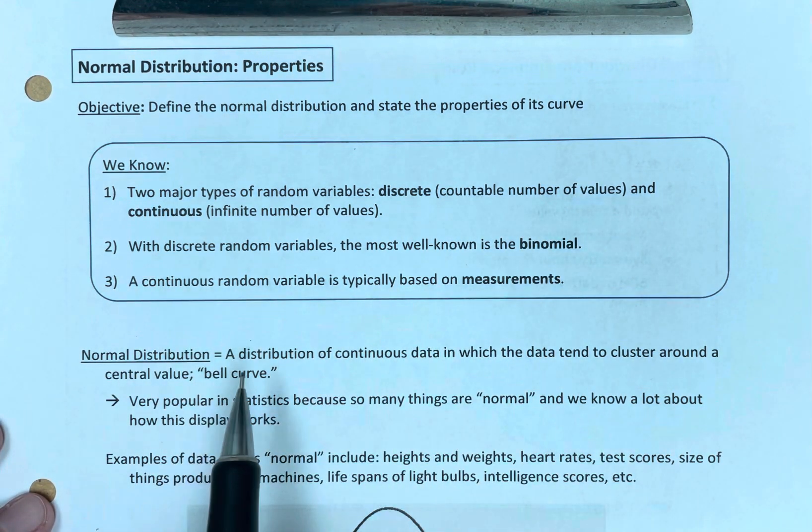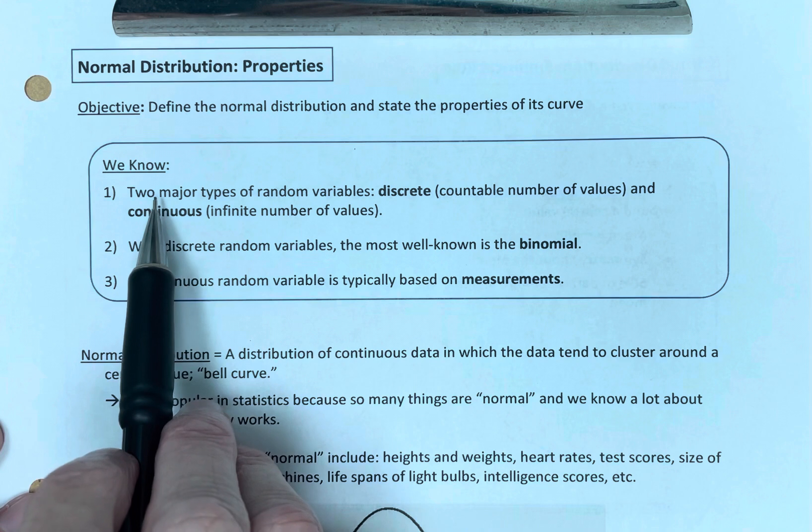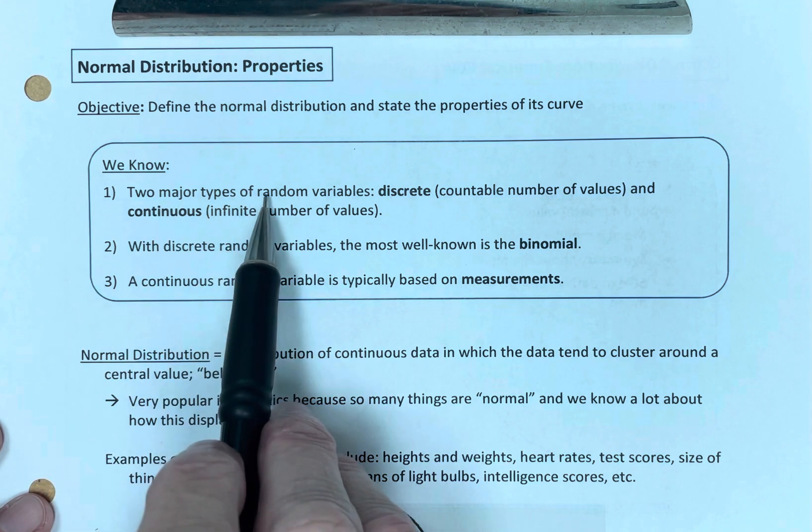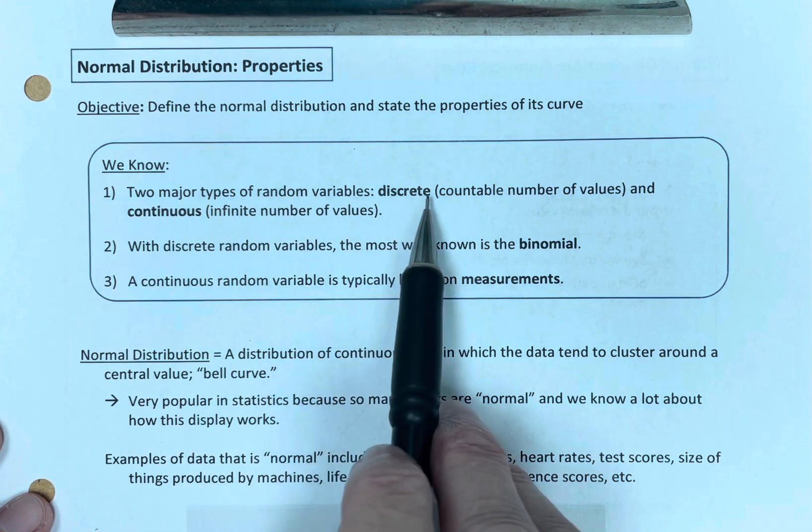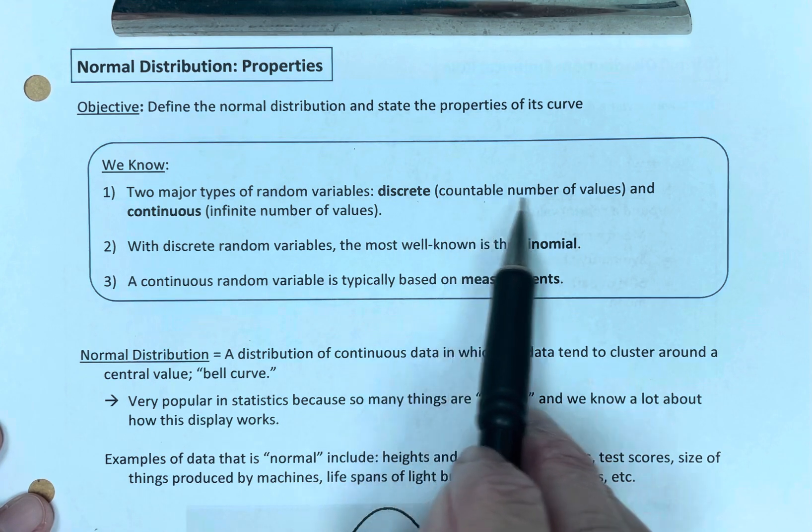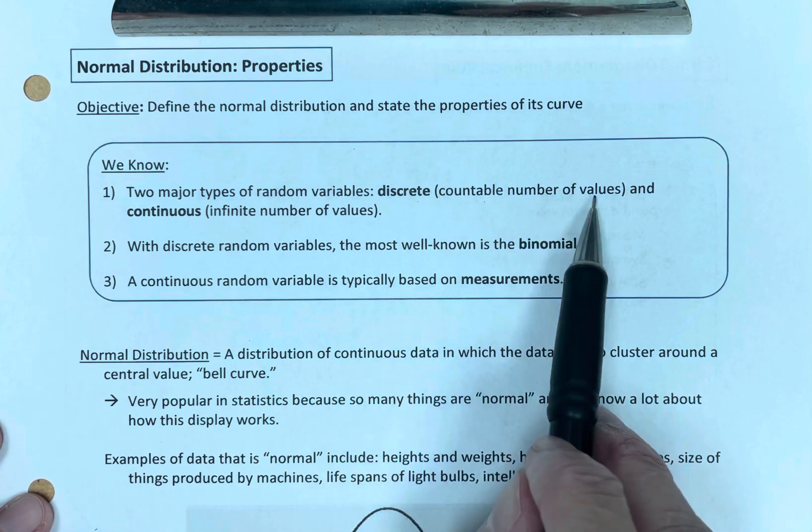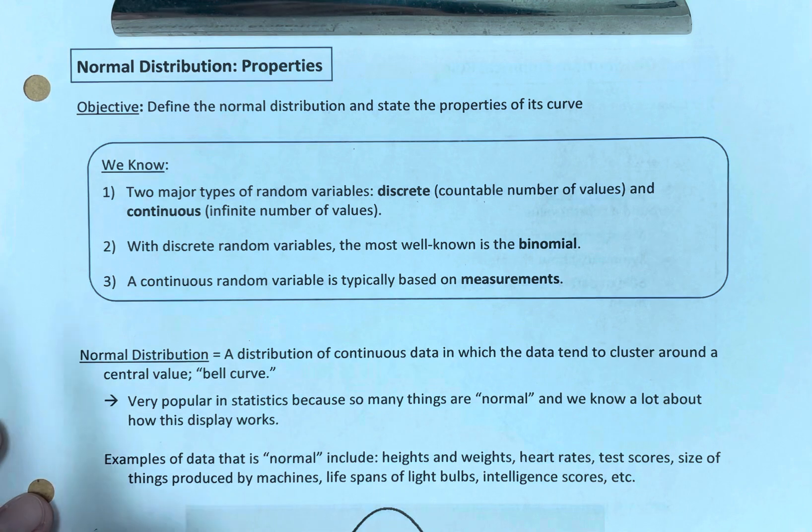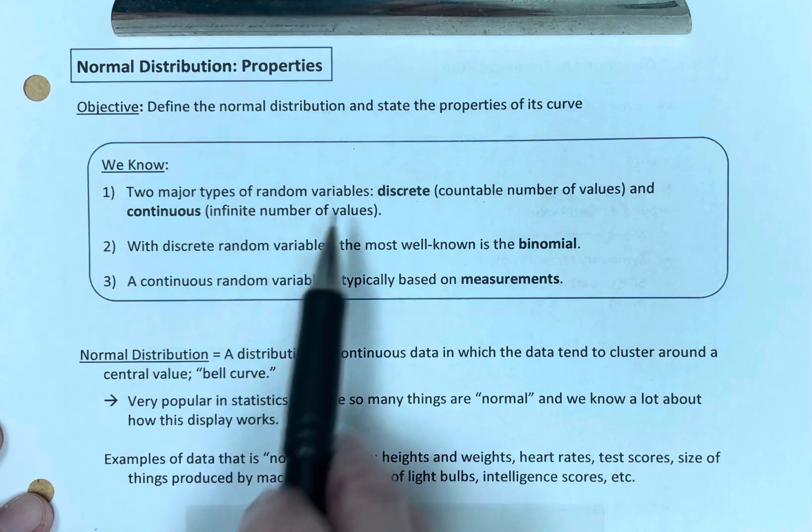Let's talk about some things we know. We know that there are two major types of random variables: discrete, which have a countable number of values, and continuous, which have an infinite number of values.